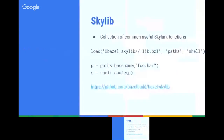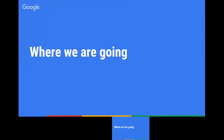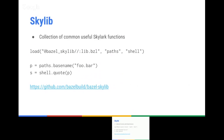There is Skylib, which we introduced recently. It's just a collection of useful utilities, because we noticed many people need the same functions and we should put them in a library. You can see functions for path manipulation or quoting strings to pass into a shell. If you write complex rules, take a look at Skylib. It's still very new, so please ask for more functions or send pull requests — it's still quite small.